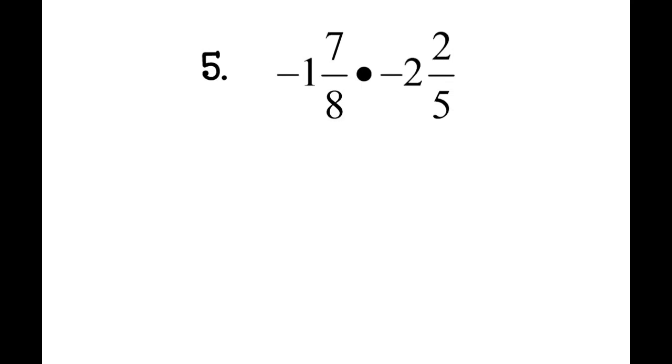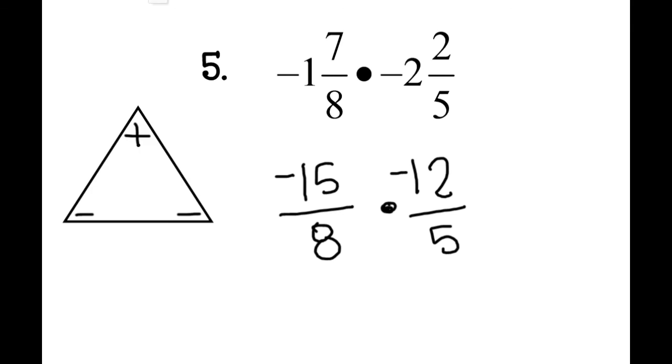Number 5: I'm going to make these improper. It just makes it so much easier to work with. I take 1 times 8, which is 8, 8 plus 7 is 15. So I have negative 15 eighths times—again, I'm going to make it improper—2 times 5 is 10 plus 2 is 12, and that's negative as well. So I have negative 15 eighths times negative 12 fifths. Then I'm going to cross-reduce. 5 goes into 15 three times, so it becomes a negative 3. I would never change the sign when I'm cross-reducing, so it stays negative 3, and this becomes a 1.